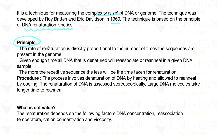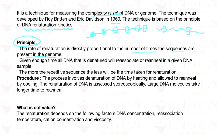The main principle is that the rate of re-naturation is directly proportional to the number of times a sequence is present in the genome. If a particular sequence is present many times — that is, it is highly repetitive — then after denaturation, when we increase temperature or use another method to separate the two strands, the rate of reconnection or re-naturation will be much faster for those repetitive sequences.